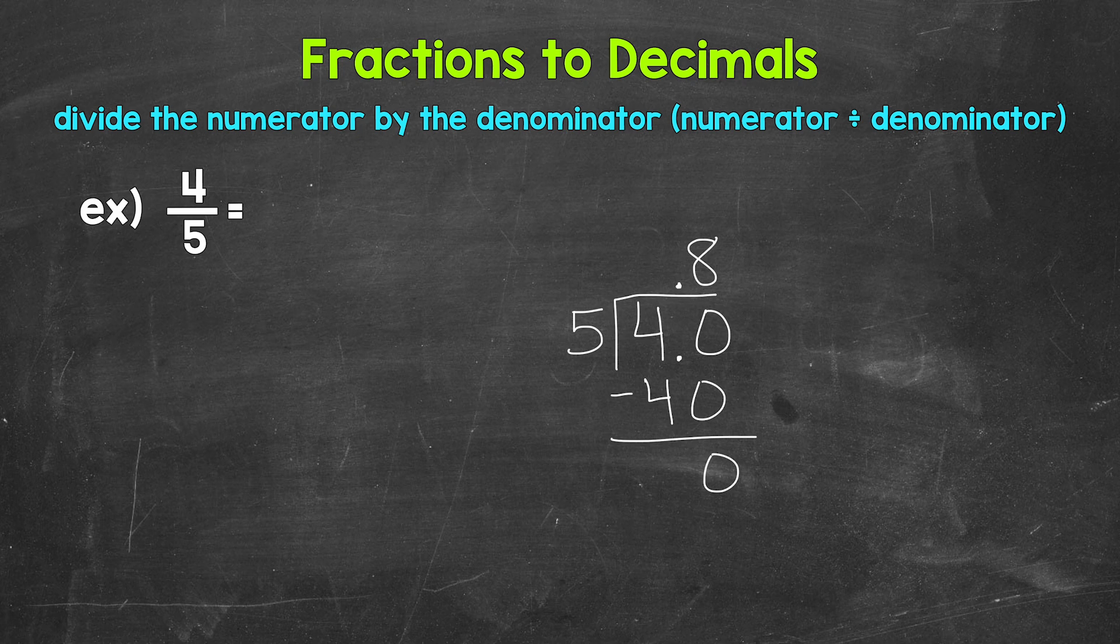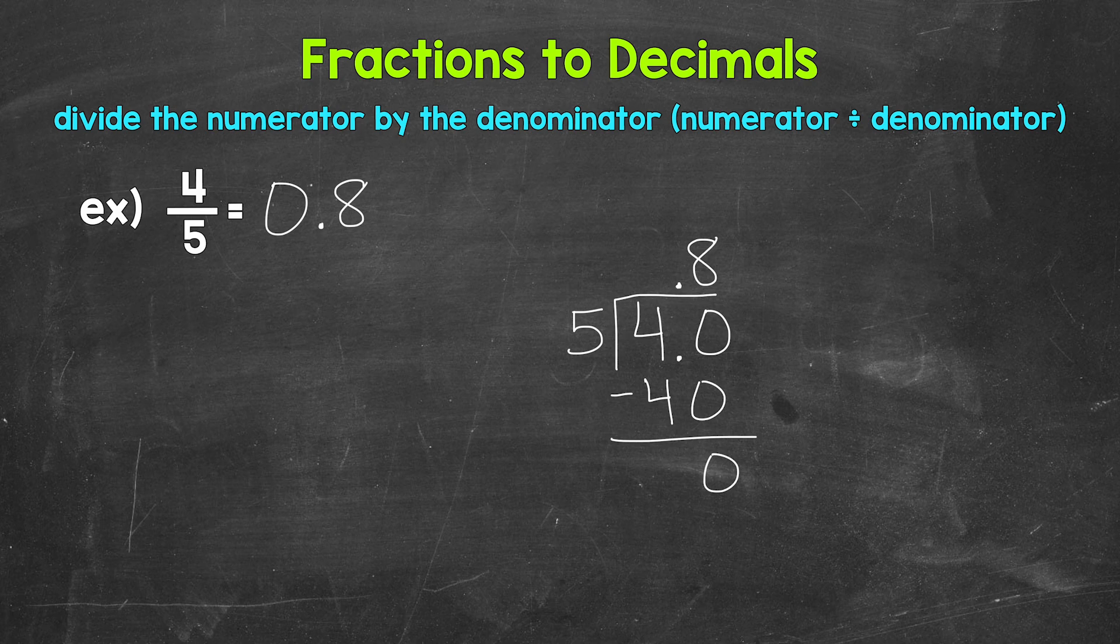4 fifths equals 8 tenths. So let's write this up here. 4 fifths equals 0.8. So again, 4 fifths equals 8 tenths. So there you have it. There's how to convert 4 fifths to a decimal.